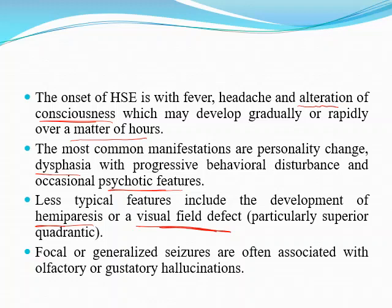Regarding visual field defects: the optic radiation's inferior branches — called Meyer's loop — pass through the temporal lobe and may be damaged by the virus, causing contralateral superior quadrantanopia. Focal or generalized seizure may also happen.